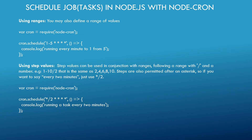You can also use ranges of values. For example, you can say 1-5, meaning the job runs from minute 1 to minute 5. The next feature is using step values.